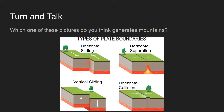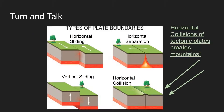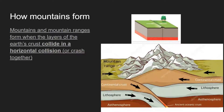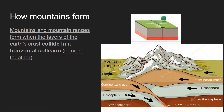Which one of these do you think generates mountains? Which one is going to generate a large hill? It's going to be horizontal collisions — horizontal collisions of tectonic plates are what create mountains. Mountains and mountain ranges form when layers of the Earth's crust collide in a horizontal collision. The product of horizontal collisions of tectonic plates is mountaintops. These two plates have been crushed together — one is being subducted and the other gets pushed along and folded upwards, which is the effect of two tectonic plates undergoing a horizontal collision.